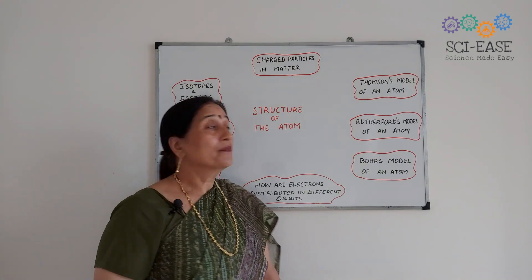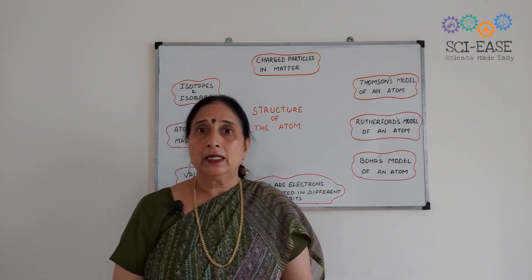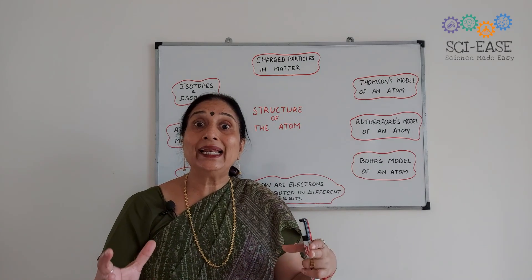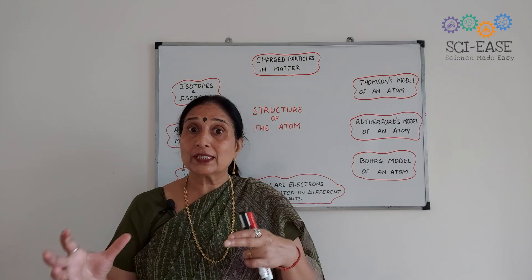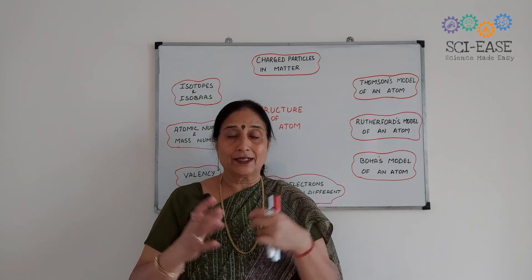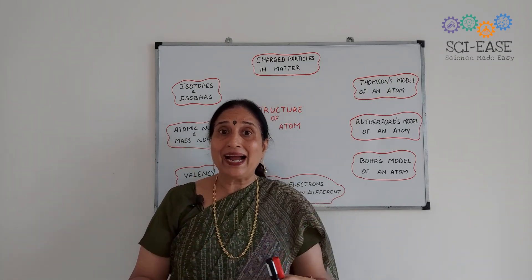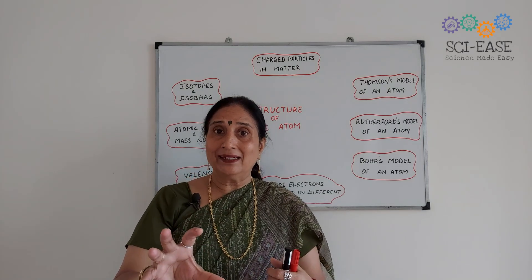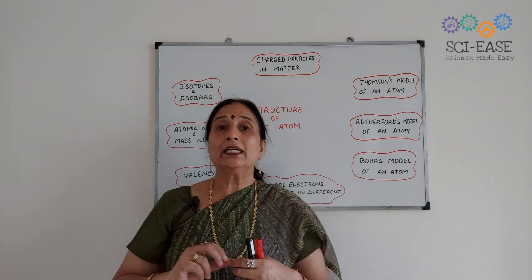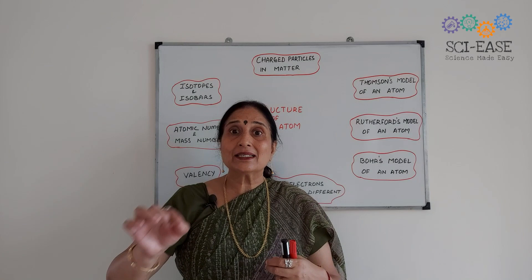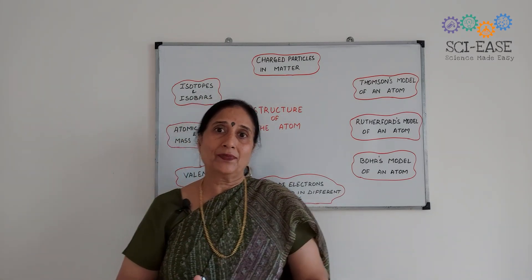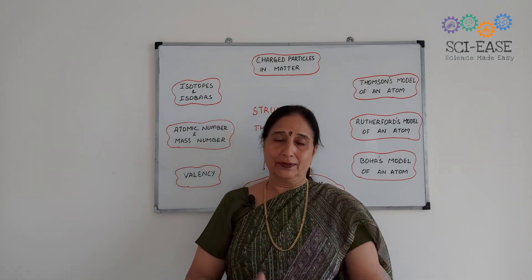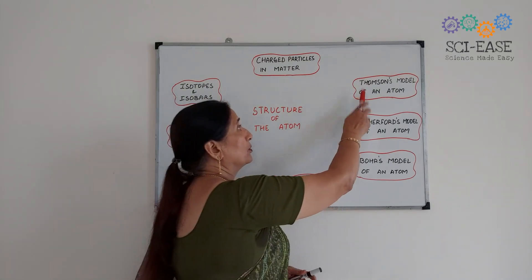The next topic is Thomson's model of an atom. J.J. Thomson contributed a lot — he told us about electrons. Negatively charged electrons are present in an atom, and he compared the structure of the atom with a watermelon: the red part of the watermelon, which is in the form of a sphere, he considered to be positively charged, and the seeds embedded in it he compared with the negatively charged electrons. He told that the atom as a whole is neutral.